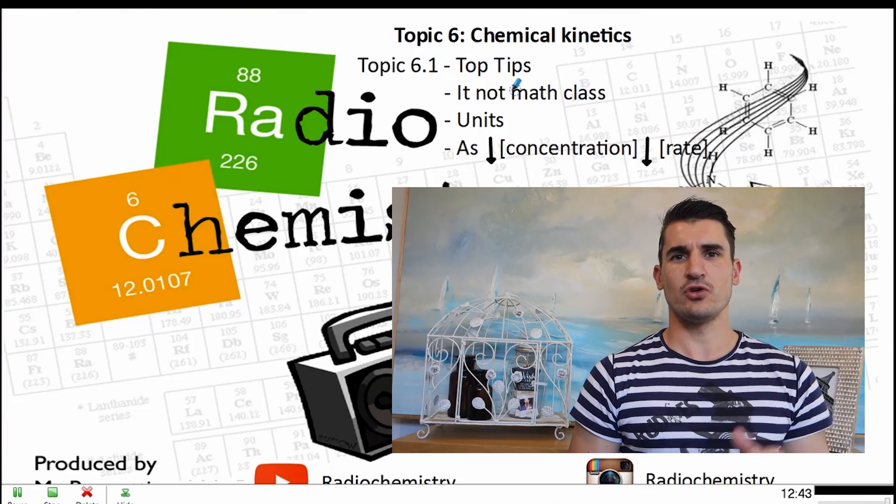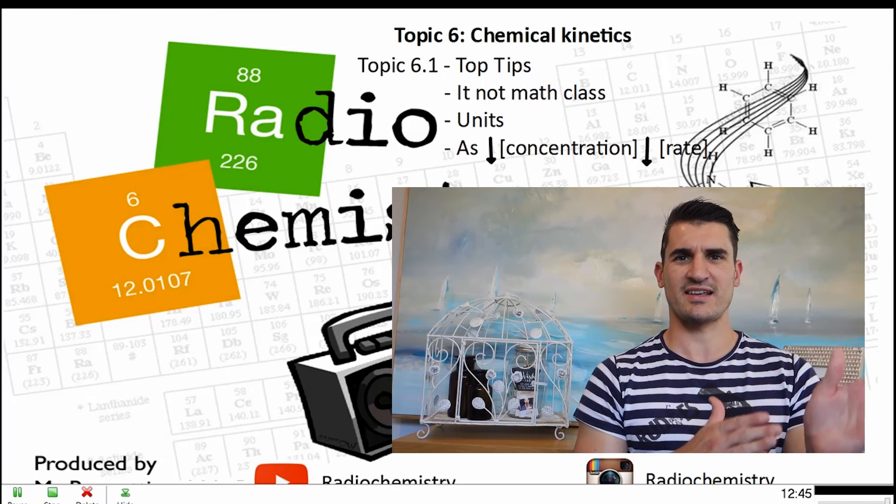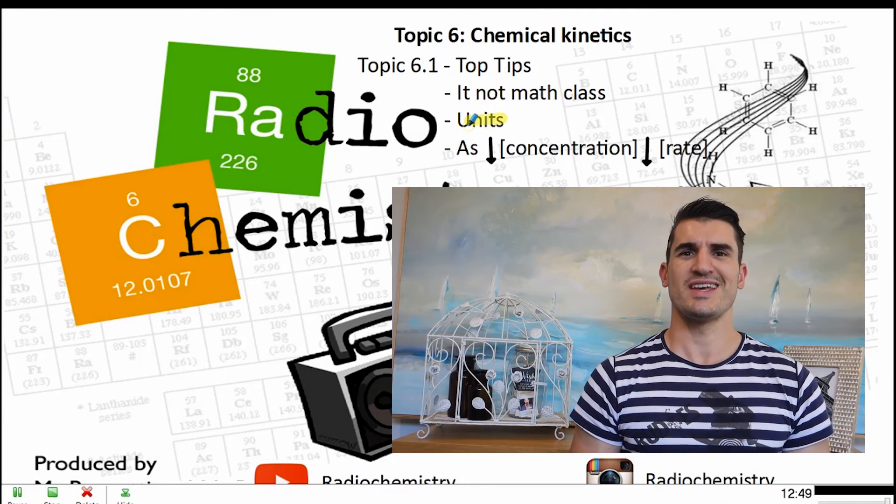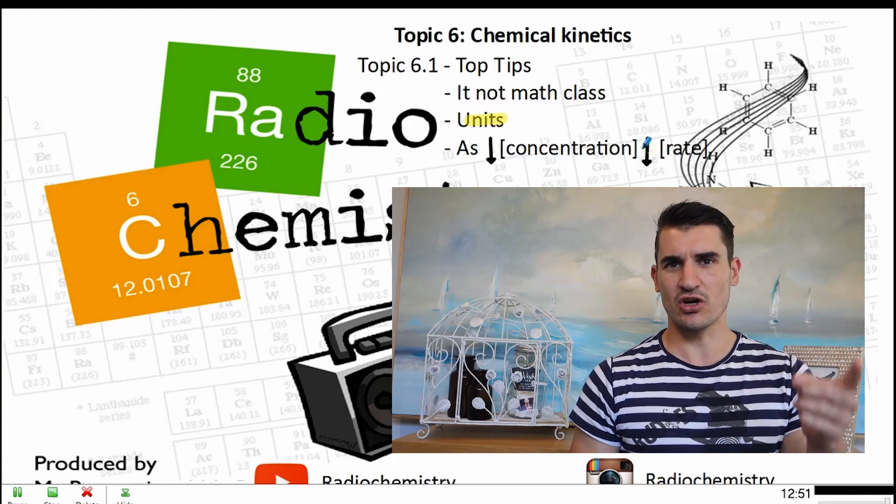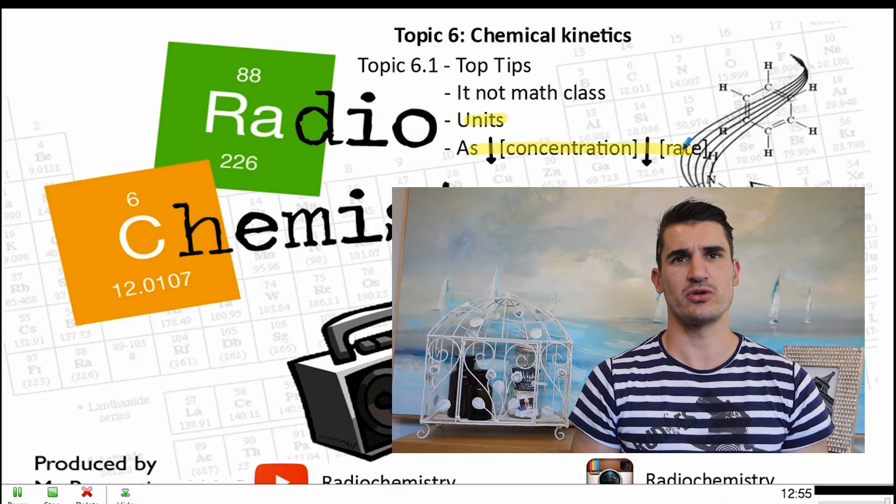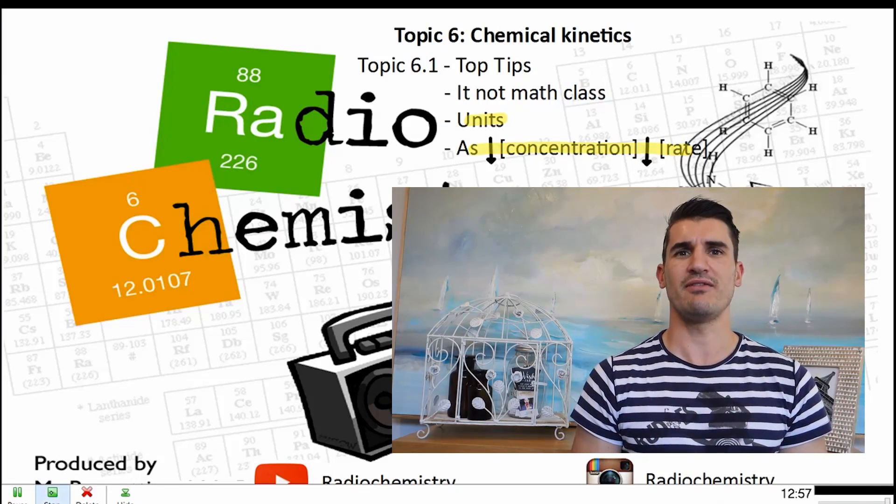Some top tips. First of all it's not math class. Use the axes, draw your tangent line, make it simple. Always remember the units and remember that with the graphs as the concentration of the reactants goes down the rate will also go down because we have less of them available to react. Thanks for watching guys. Don't forget drop a like on the video, subscribe for more and I'll see you next time.